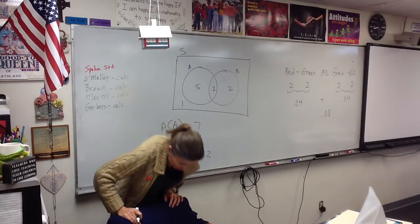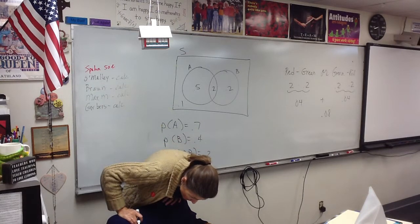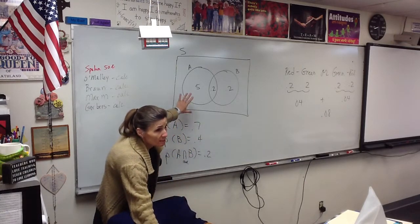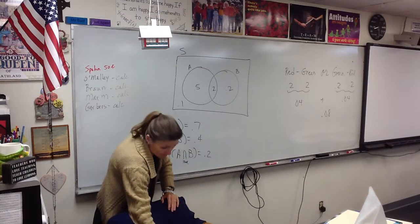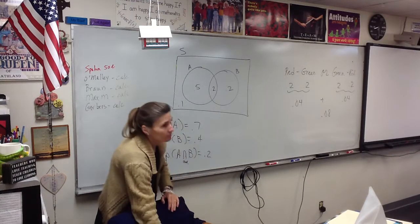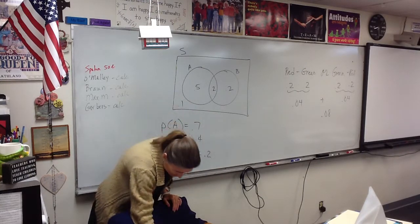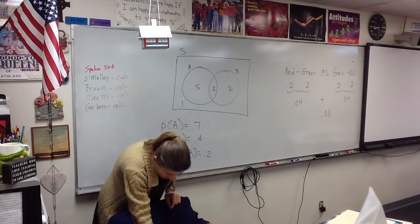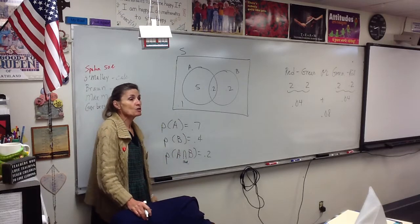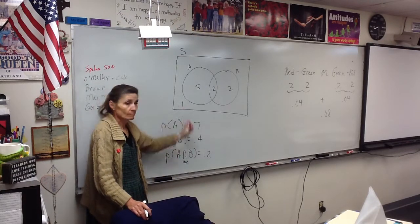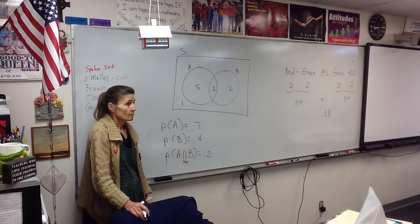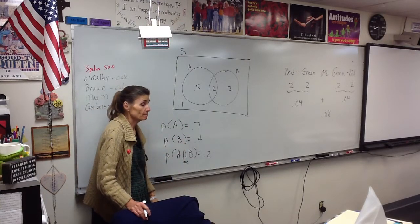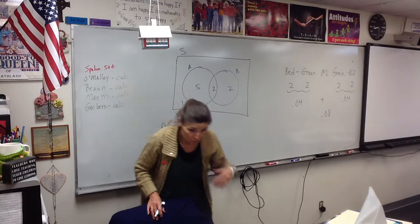Now we can answer the questions: the probability that A occurs but B does not is 0.5; the probability that B occurs but A does not is 0.2; and the probability of neither A nor B is 0.1. Tonight you'll have to do a Venn diagram structured just like that.